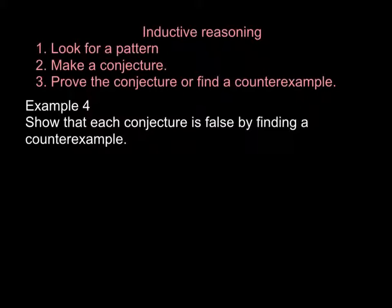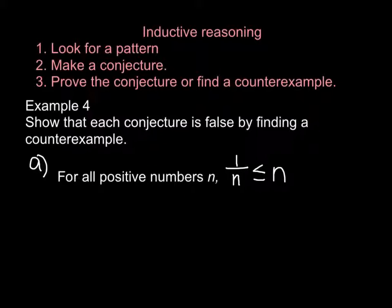Example four. This is our last one. Show that each conjecture is false by finding a counterexample. So, for all positive numbers n, 1 divided by n is less than or equal to n. All you have to do is substitute values of n to see if the conjecture holds true. If you start picking things, and it's always true, then maybe the conjecture is always true. All it takes is one thing to enter though, and makes it false, then the entire conjecture is false. So, let's just start picking numbers. Let's pick 1. 1 divided by 1 is less than or equal to 1. That's 1 is less than or equal to 1. That's true. Let's try 2. 1 divided by 2 is less than or equal to 2. Well, that's true.